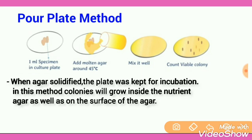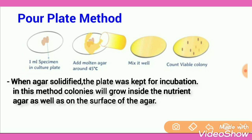The melted agar and sample are mixed, then after solidification, the petri dish undergoes gentle agitation so they are mixed well. After solidification, incubation is done. After incubation, bacterial colonies can be seen growing in both areas of the culture media. This is the whole process.